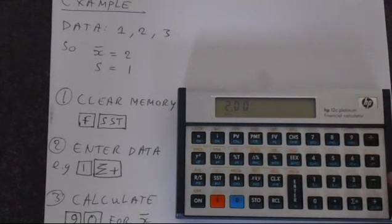So we've put 2 in, that's why that's showing 2. And if we put 3 sigma plus, we've got 3 data points, and it's all now into the correct memory.